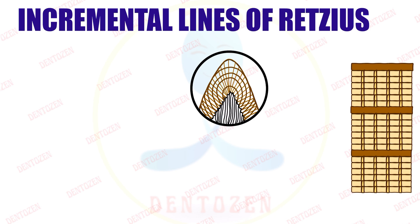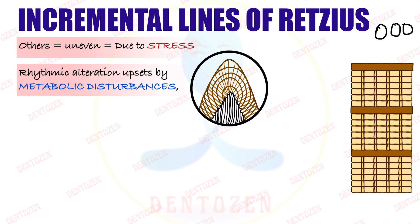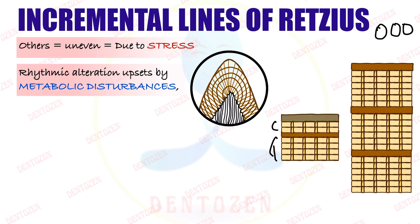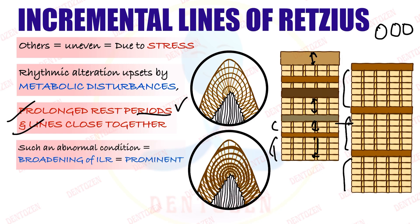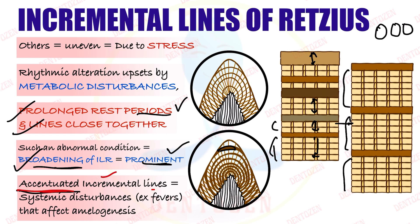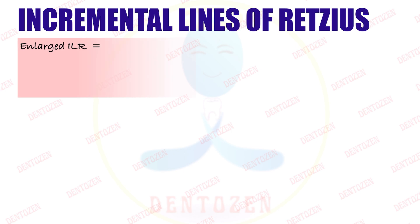Something can go wrong with these lines. When ameloblasts are affected by stress or metabolic disturbances, enamel formation is not normal. Ameloblasts may work for four days, take rest, work for a few days, rest again, with periods of rest becoming longer. This leads to lines which appear in section as broadened, increased in thickness, more prominent — these are called accentuated or prominent incremental lines, seen when there are systemic disturbances affecting the ameloblast during enamel formation.